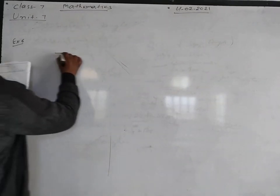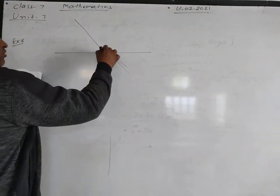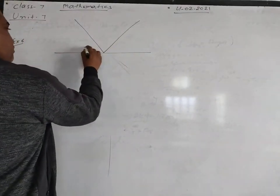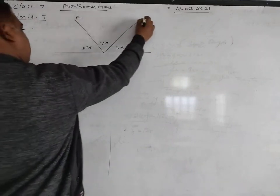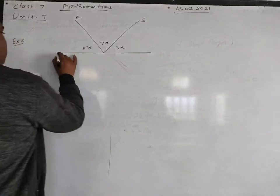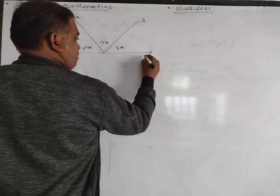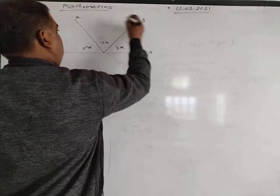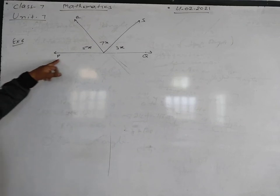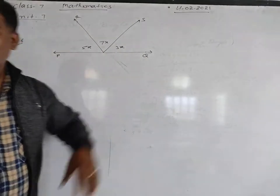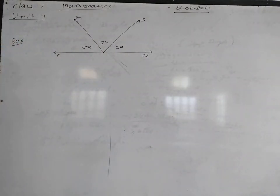Next, example number 6: Find the value of x. The figure shows angles 5x, 7x and 3x with points R, S, P and Q. PQ is a straight line, so the angles on one side equal 180 degrees.